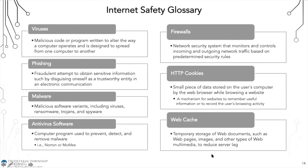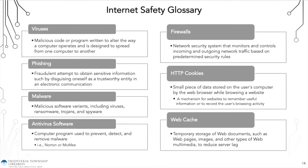Phishing is a fraudulent attempt to obtain sensitive information by disguising oneself as a trustworthy entity in an electronic communication. This is the most common scam you'll come across. For example, I was on Craigslist looking for an apartment and noticed a phishing scam on a listing right away. Be very careful with unsolicited emails — don't click any links and don't provide sensitive information like your social security number or credit card info unless you know who you're giving it to.